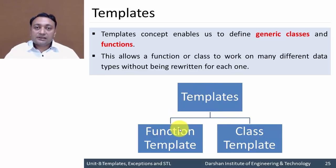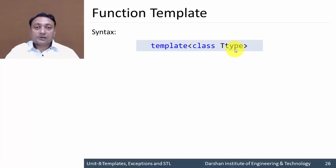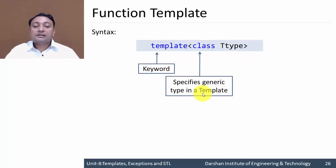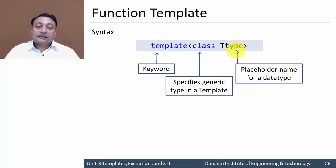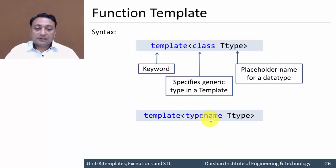There are two further classifications of templates: one is function template and another is class template. Here is the syntax: we write the 'template' keyword, then opening and closing angle brackets, and in between that the 'class' keyword and a type name T. Here T is just like a variable name — you can write any variable name. We are creating a new data type, like integer, float, or character. The 'class' keyword specifies a generic type in a template used for various data types, and T is a placeholder name for a data type. Another syntax is to write 'typename' instead of 'class' — both are valid.